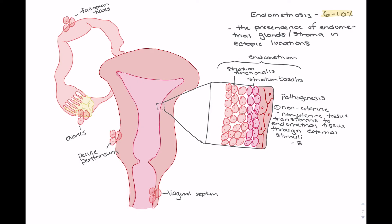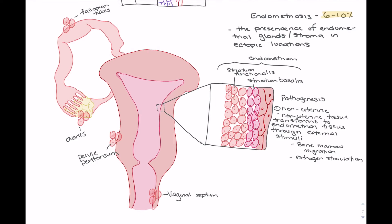We'll look at two examples of non-uterine theories. One of these is the bone marrow migration theory, and the second is one of estrogen stimulation of native cells. We'll blow up our fallopian tube and take a look at the cells here, because this is a common site of endometriosis development. What we're going to draw here is our bone marrow cell, or our bone marrow mesenchymal cell.